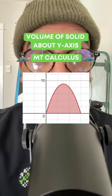Let's talk about when we don't want to use a disk or washer method. We're going to go ahead and find the solid revolving about the y-axis using the shell method.